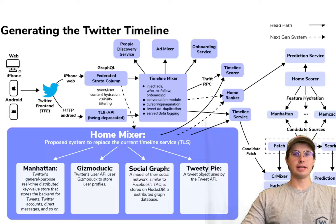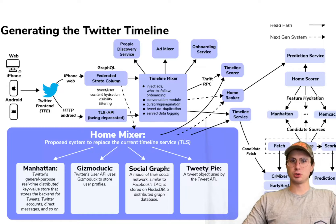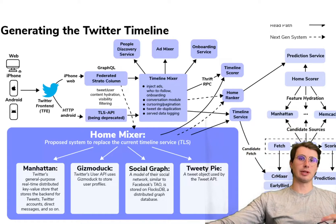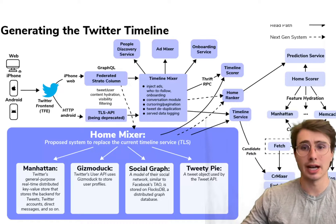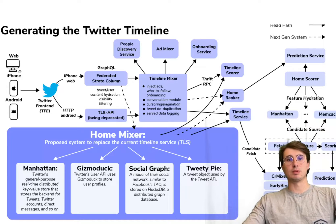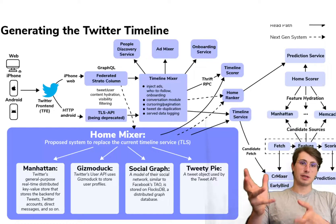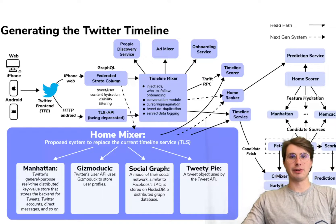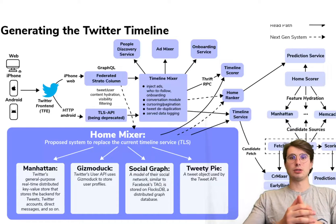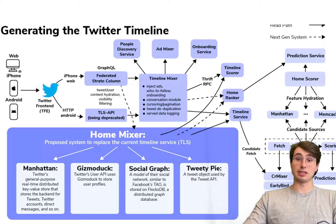The third principle is to architect for scalability. Scalability is the ability of a data architecture to handle growth — whether in data volume, number of users, or complexity of operations — without a drop in performance. Architecting for scalability involves employing elastic resources, modular design, and scalable technologies. Twitter is a great example: it handles enormous amounts of data and sudden traffic spikes during major events by using sharding and partitioning to distribute data and load evenly across systems.